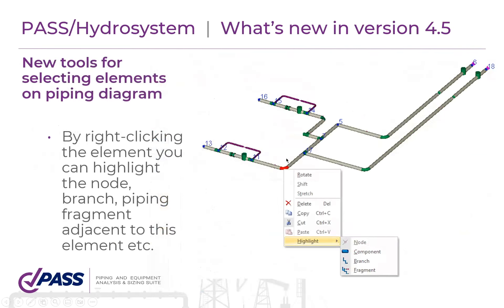Also in the latest version of HydroSystem, we have a new tool for highlighting special components. By right-clicking on an element, you can highlight not only that element itself but also its branch, fragment, or associated nodes. This makes it easy to quickly access any desired piping component.